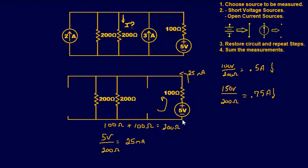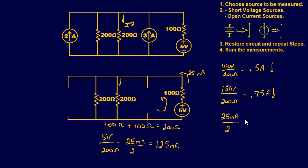Mind the polarity of the voltage source so you know the direction of current flow. We have 25 milliamps going between two 200-ohm resistors. Since they're equal, the current splits evenly: 25 milliamps divided by 2 gives 12.5 milliamps flowing downward through our target 200-ohm resistor for the voltage source contribution.